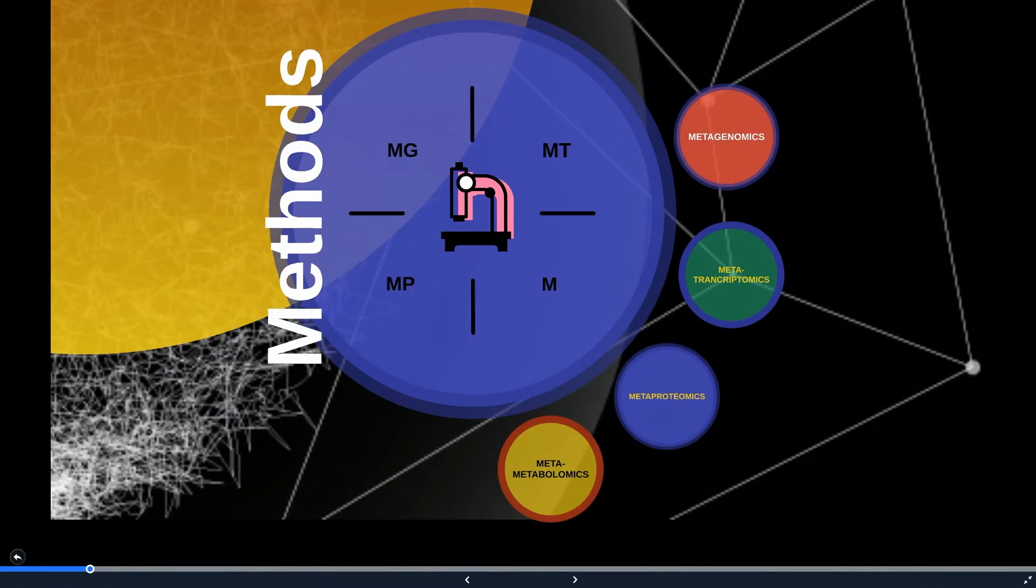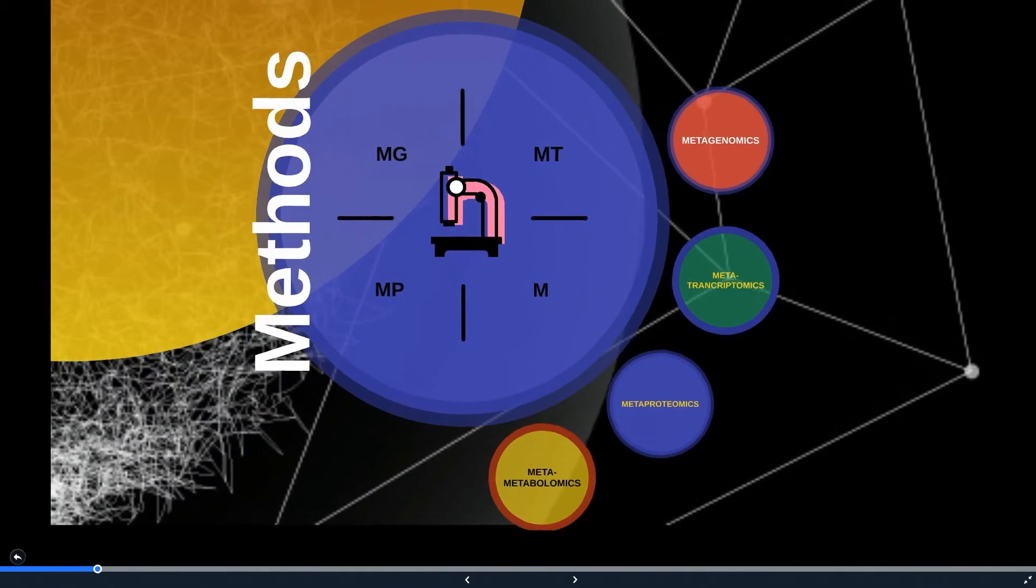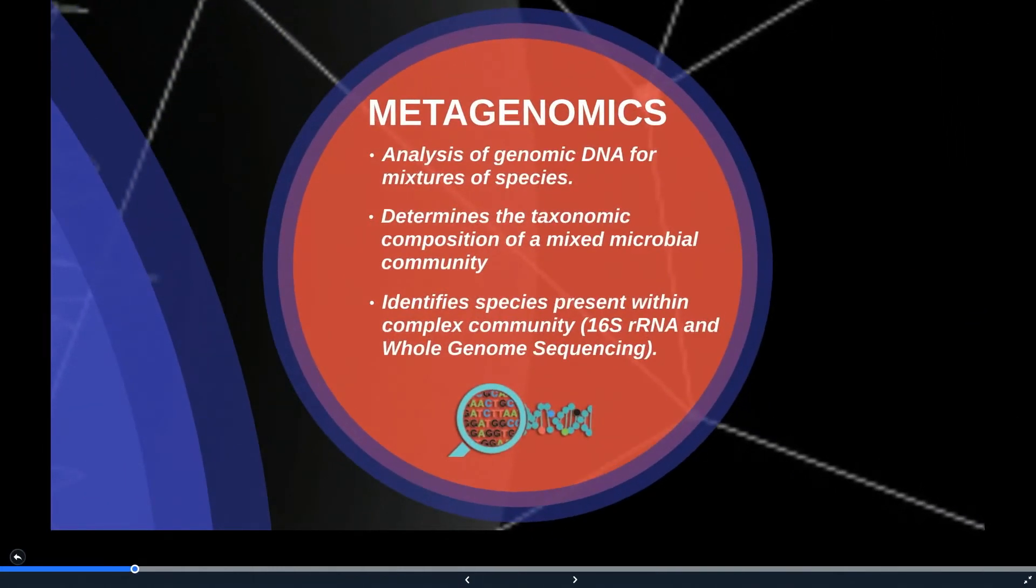The microbiome can be studied with different methods. Metagenomics is the analysis of genomic content of species, which can help determine taxonomic composition of the microbial community. A typical output is taxonomic abundance lists of the various species or genera present in the sample.